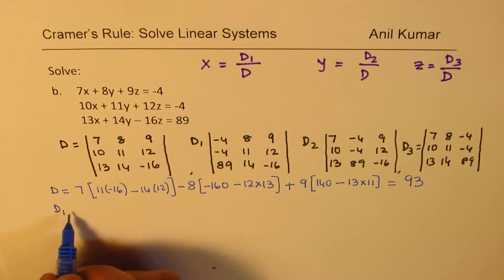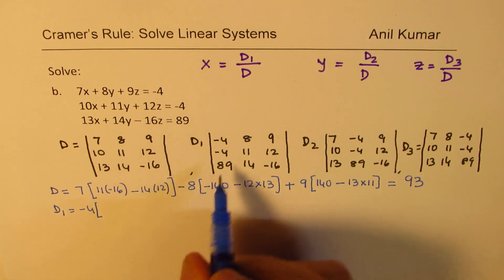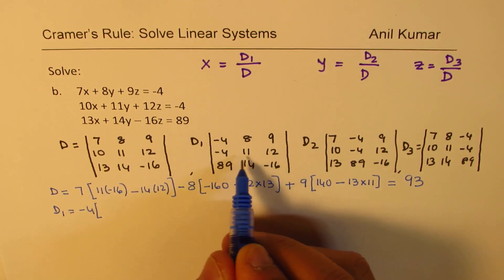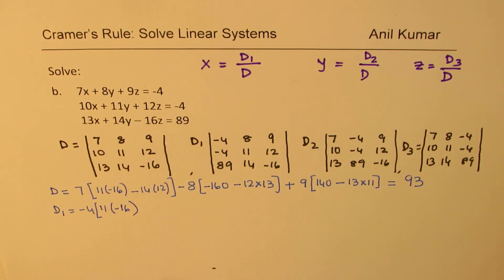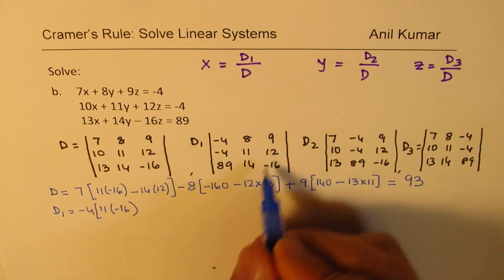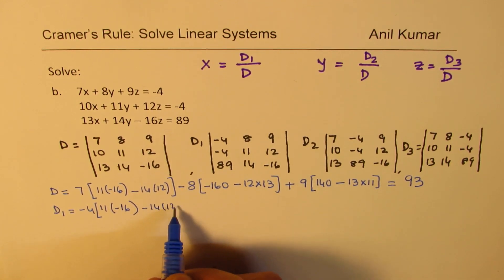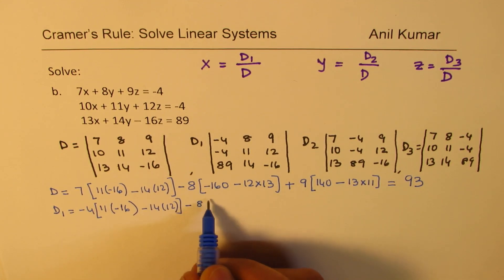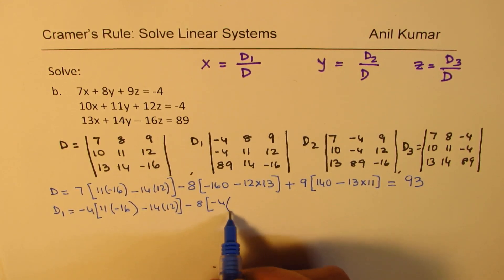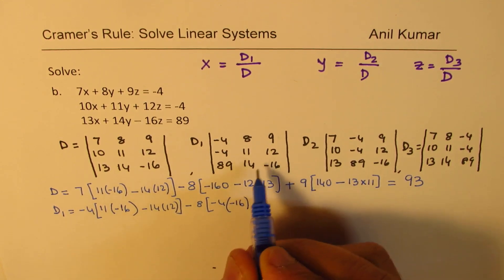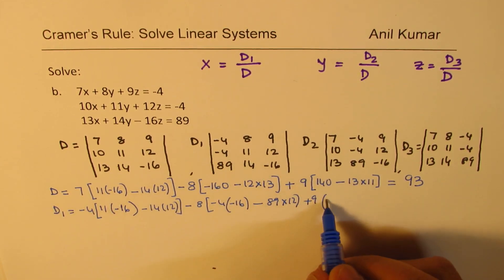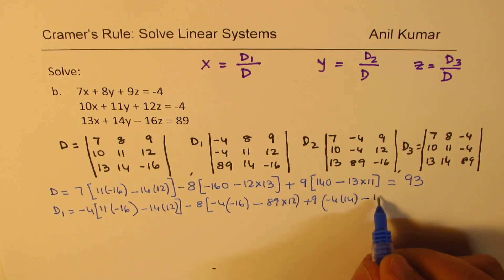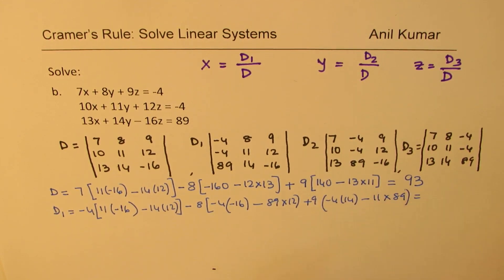So, let's do D1 now. For D1, again, we'll start with the first number right in the corner, and that is the cofactors. We'll find 11 times, so it is, again, 11 times -16. And this gets multiplied, 14 times 12, with a negative sign. And then, we have 8 here, negative sign. So, -4 times -16, so that becomes positive, 89 times 12. Plus 9 times -4 times 14, minus 11 times 89. Let's calculate this value now.